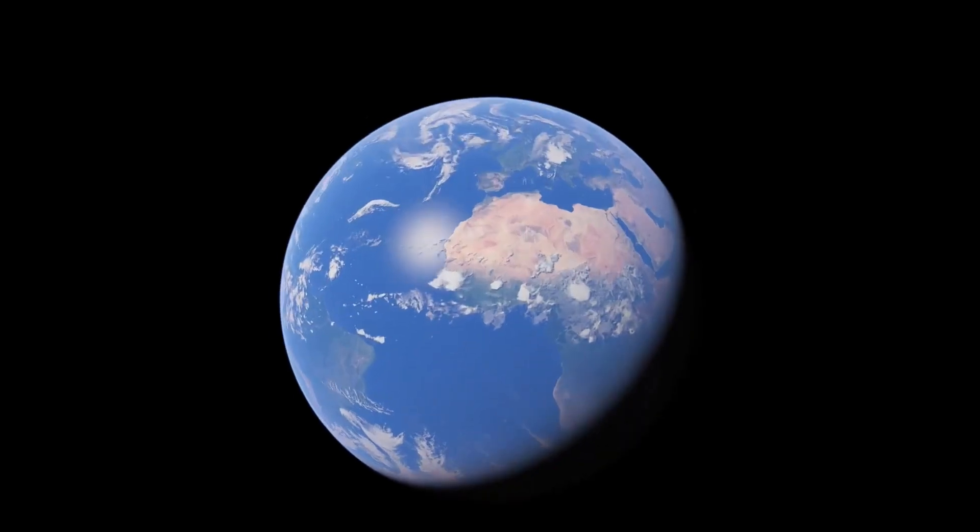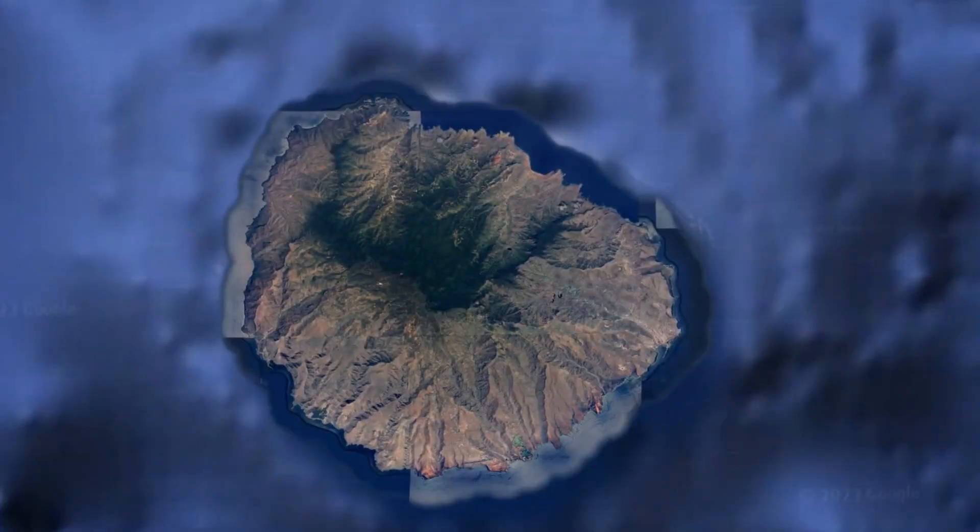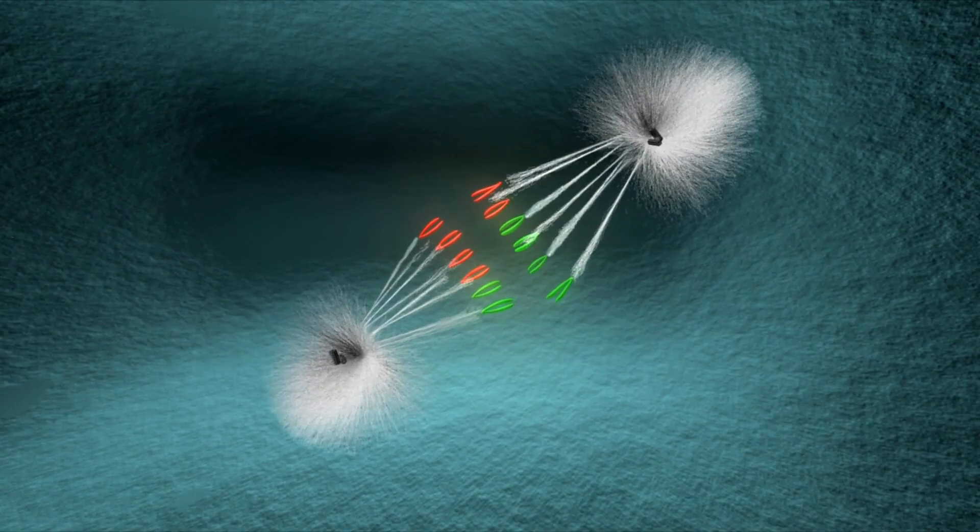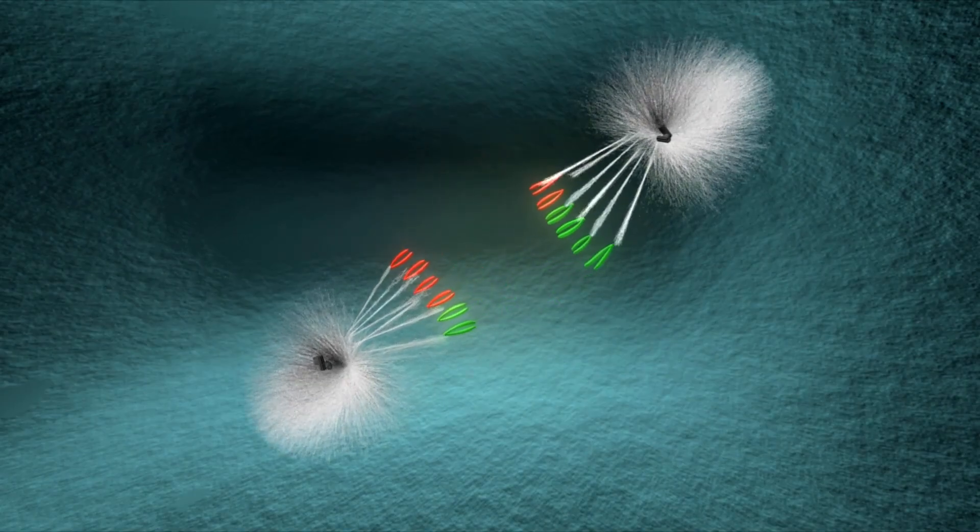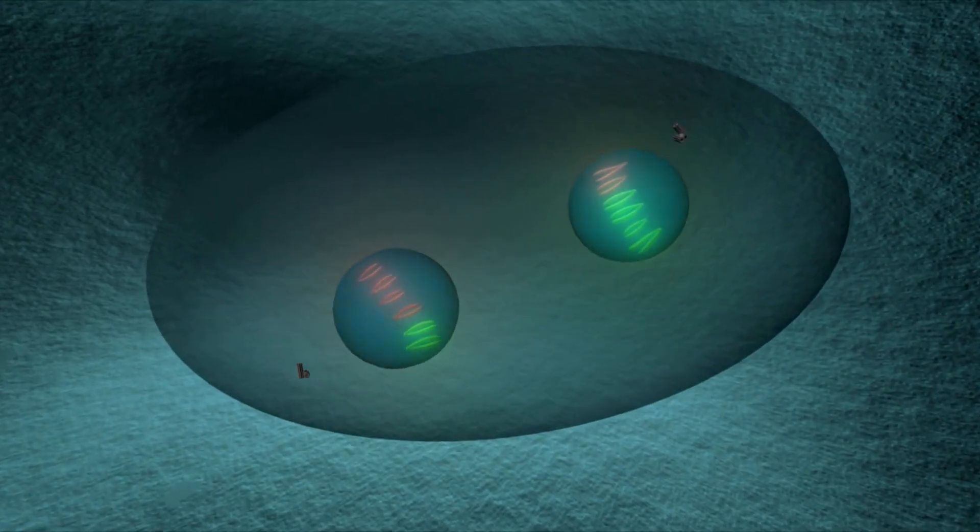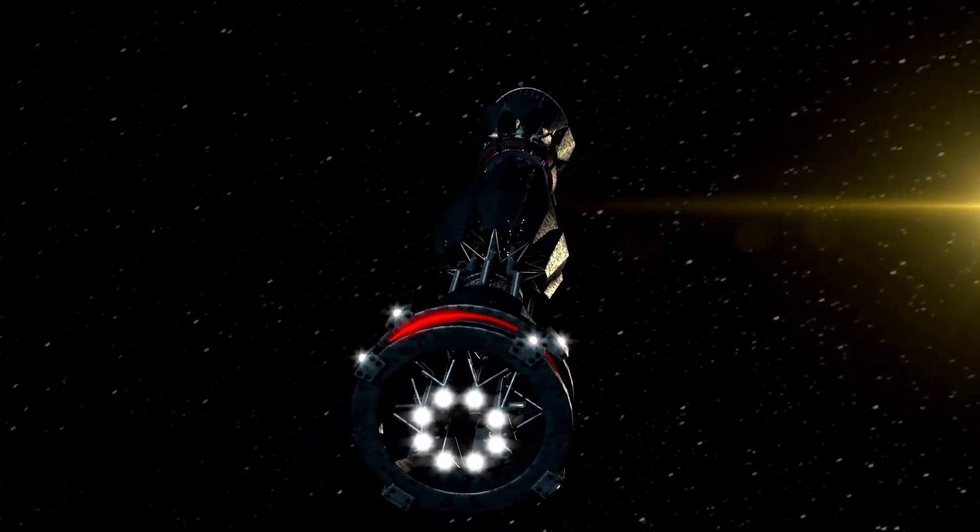From Earth's vantage point, 3I Atlas spent perihelion hidden almost directly behind the sun. This geometry shut down ground-based telescopes for several days, leaving even professional observatories waiting on the sidelines. Yet the blackout wasn't total. Spacecraft orbiting far from Earth, like the Punch mission, kept their eyes on the prize.